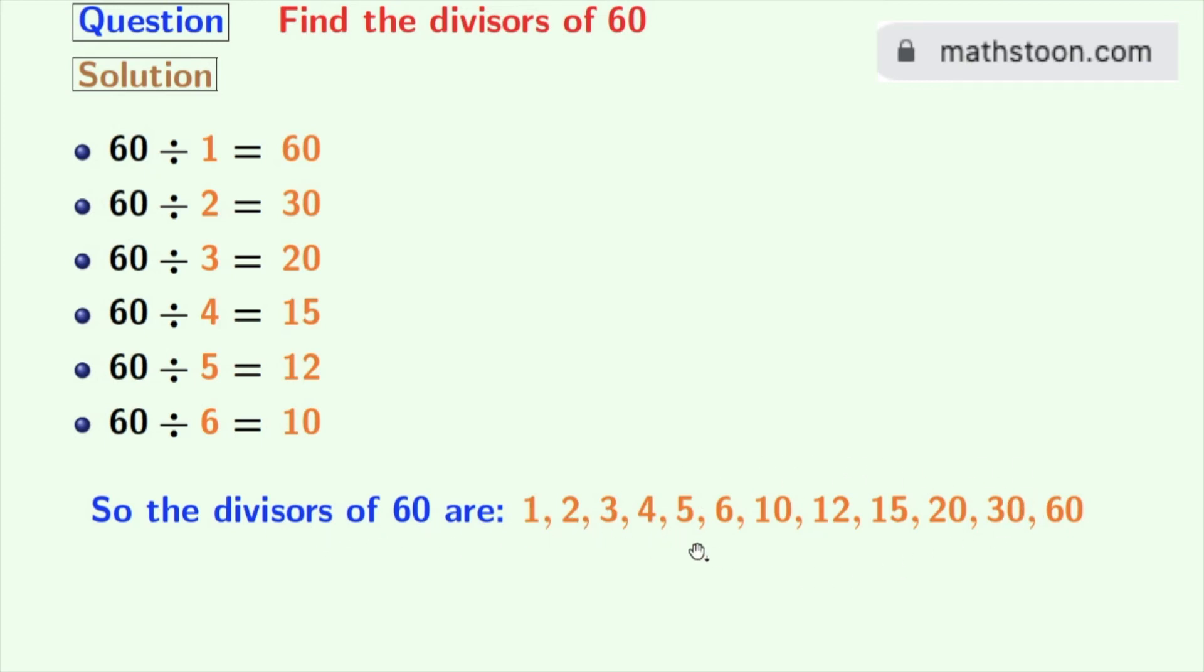Now if we look at these divisors, we can see that 2, 3 and 5 among these numbers are prime numbers. Because these three numbers do not have any divisor other than 1 and the number itself. So we can say that the prime divisors of 60 are 2, 3 and 5.